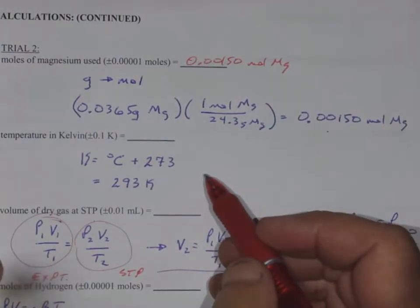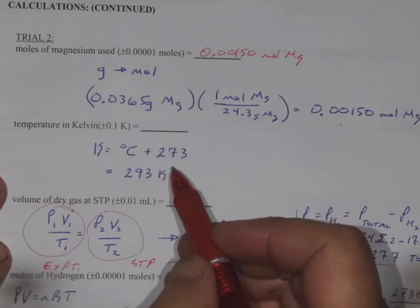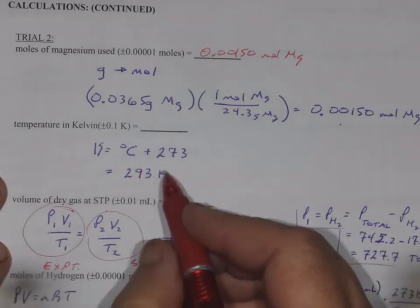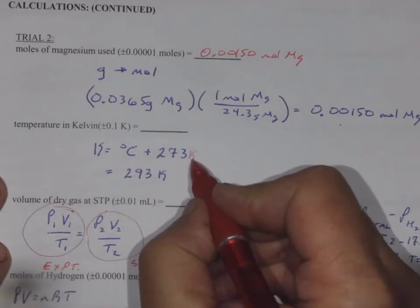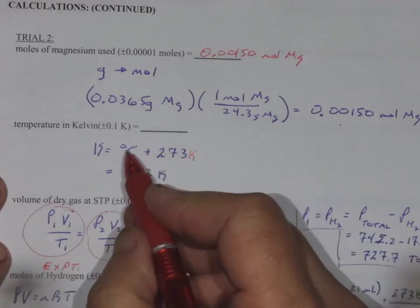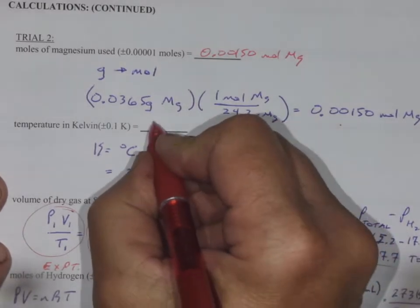The conversion of Celsius into Kelvin is we take the temperature in Celsius and we add 273 Kelvin. I didn't write it down, but it was 20 degrees, 20 and 273 is 293 Kelvin.